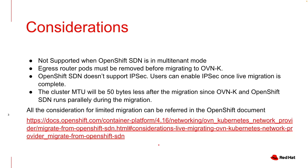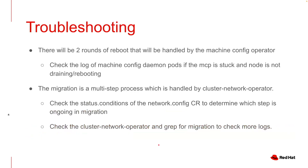Now we'll look into the troubleshooting steps if your cluster gets stuck during the limited live migration process. There will be two rounds of reboot handled by the machine config operator. If you see any MCP that is stuck, you need to check if the nodes are correctly draining or rebooting. The migration process is a multi-step process handled by the CNO, which is the cluster network operator. To see which step you are currently in, check the status.condition field in the network.config CR. If you want more logs, check the cluster network operator logs and grep for the migration.go keyword to look into logs related to the limited live migration process.